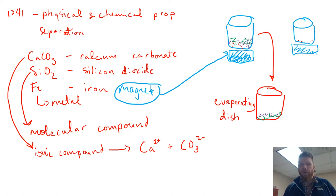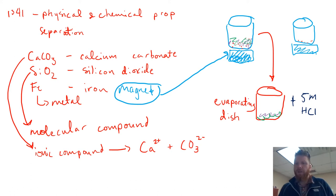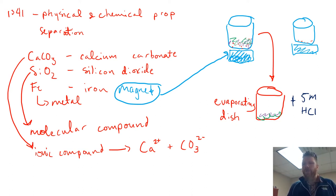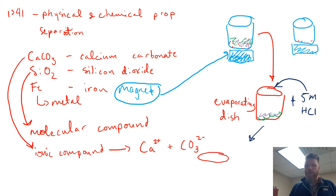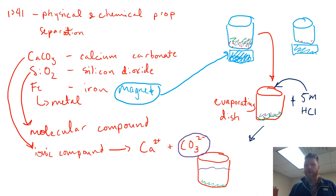Meanwhile, the two other components — silicon dioxide and calcium carbonate — you're going to add five molar HCl to those. At this point you probably haven't gotten to molarity, but that has to do with the concentration: how many molecules of HCl are there per liter. What's going to happen is that calcium carbonate is going to become solubilized and break down, and you're going to form bubbles of CO2.